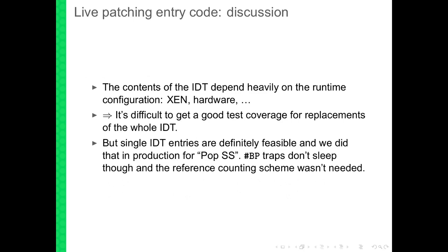In discussion: unfortunately the contents of the interrupt descriptor table — 256 entries — are not constant but depend on runtime configuration. For example, Xen brings its own IDT, and apparently UV fills in some slots. As a consequence, it's very difficult to test a whole IDT replacement, which is why we didn't release the Meltdown live-patch. But for single IDT entries it's feasible and testable. For the POP SS vulnerability it was even easier because the breakpoint traps don't sleep, so we didn't have to do the reference counting.